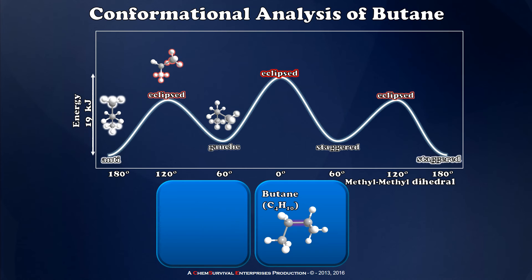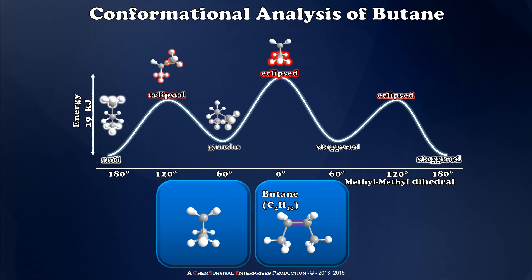Proceeding through another 60 degree rotation takes me to my least stable conformation — one in which the two methyl groups eclipse one another. When the two largest groups eclipse one another, we refer to this as a syn conformer, and the syn conformer is always the highest energy possibility.